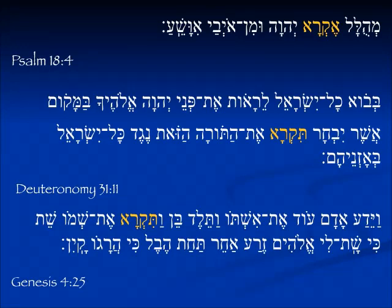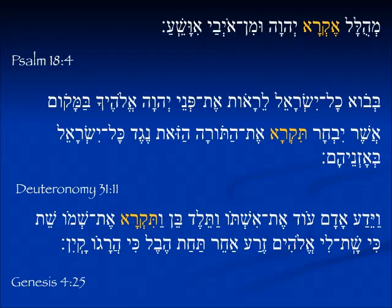In Deuteronomy 31:11, Adonai is giving instructions to Moses about when the people come into the land and appear before him in the place he chooses. He tells Moses, 'Tikra et ha-Torah hazot' — you will read this Torah to all the people. In Genesis 4:25 we see the same form Tikra, but here it is for the feminine third person singular — 'she will call' — talking about Adam's wife who gives birth to a son and calls his name Seth.